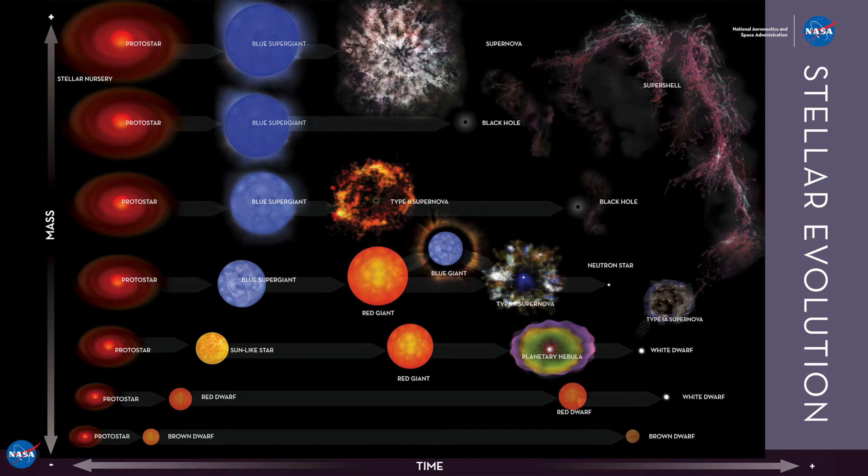This next unit is all about stellar evolution. Here we can see a generalized infographic outlining the various paths that a star may take during its life after it's first born, as it grows up, and eventually enters the late stages of life before approaching its inevitable death.